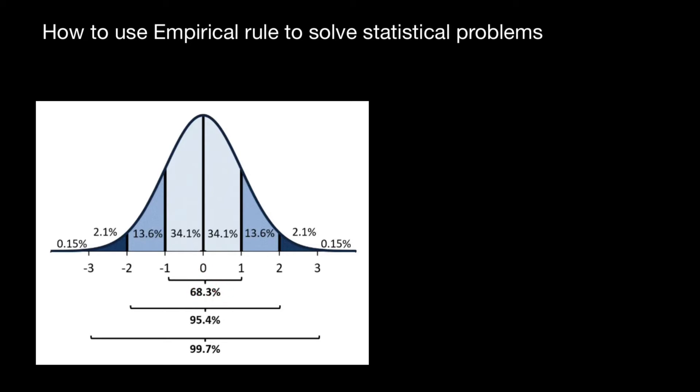With two standard deviations of the mean, both left side and right side, there are about 95% of the data.